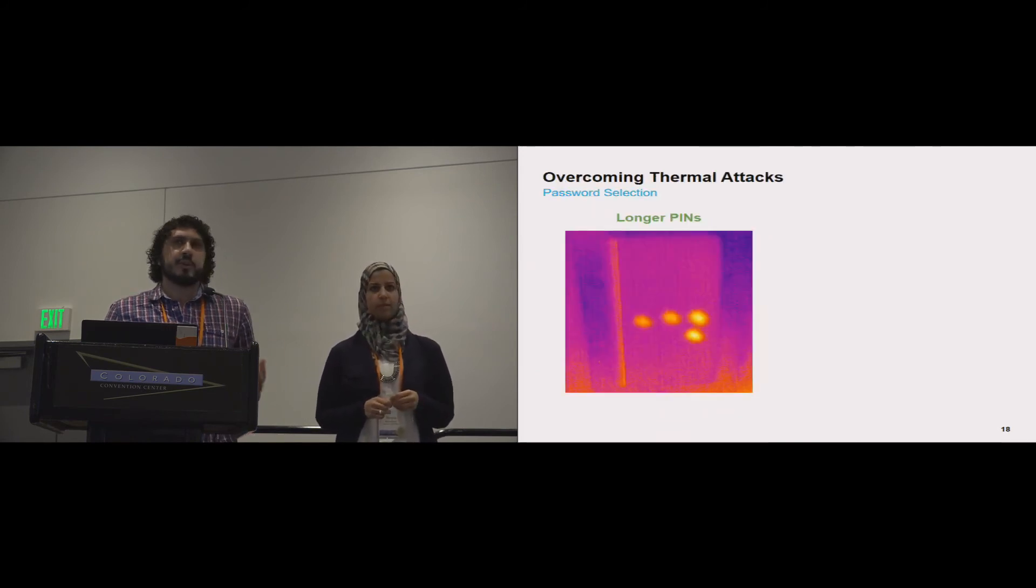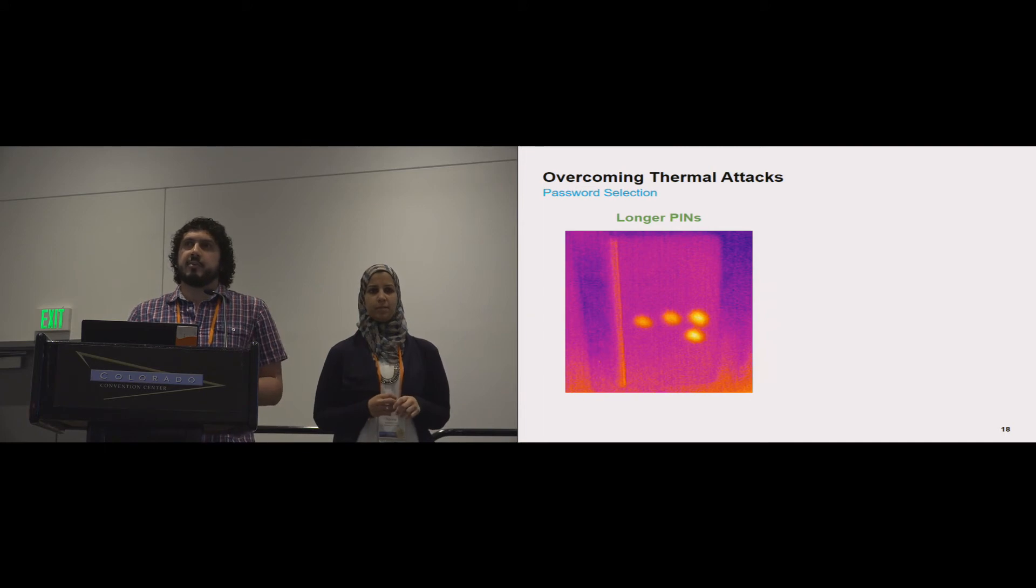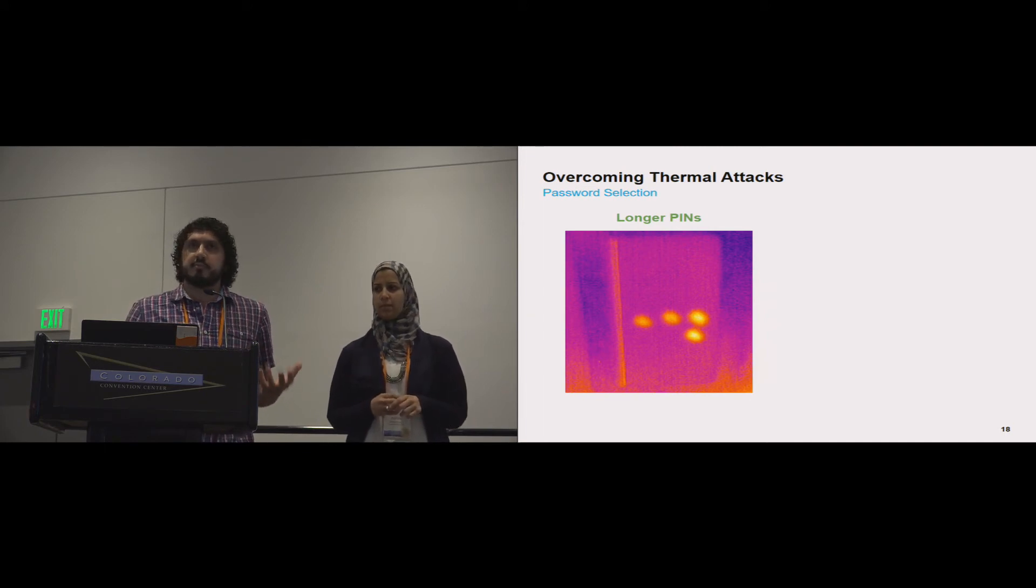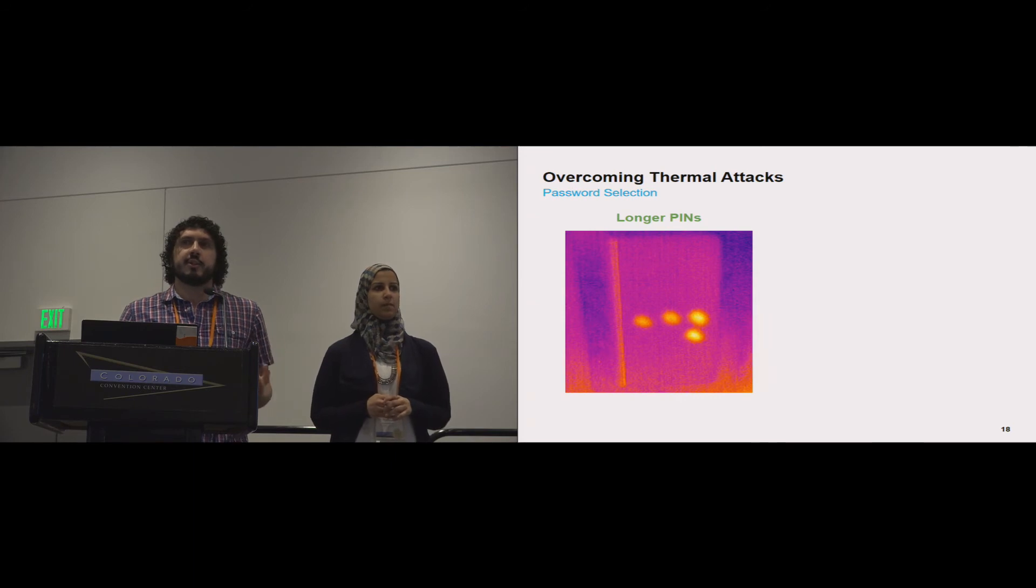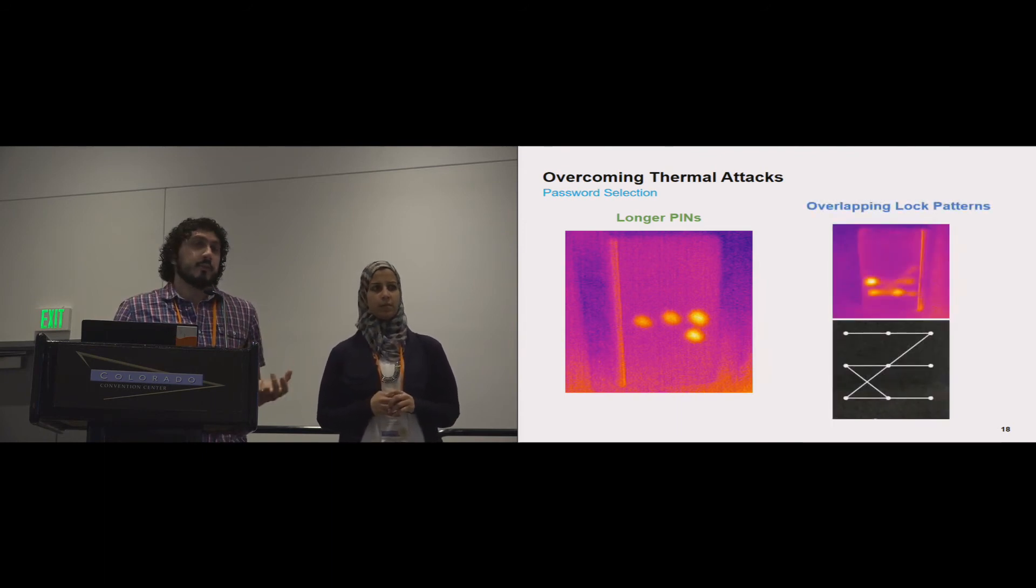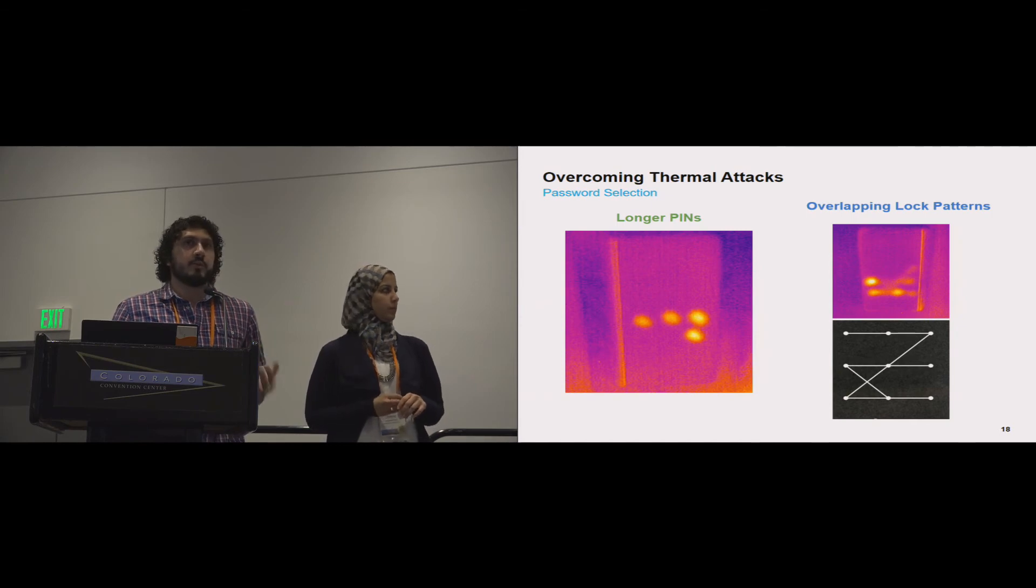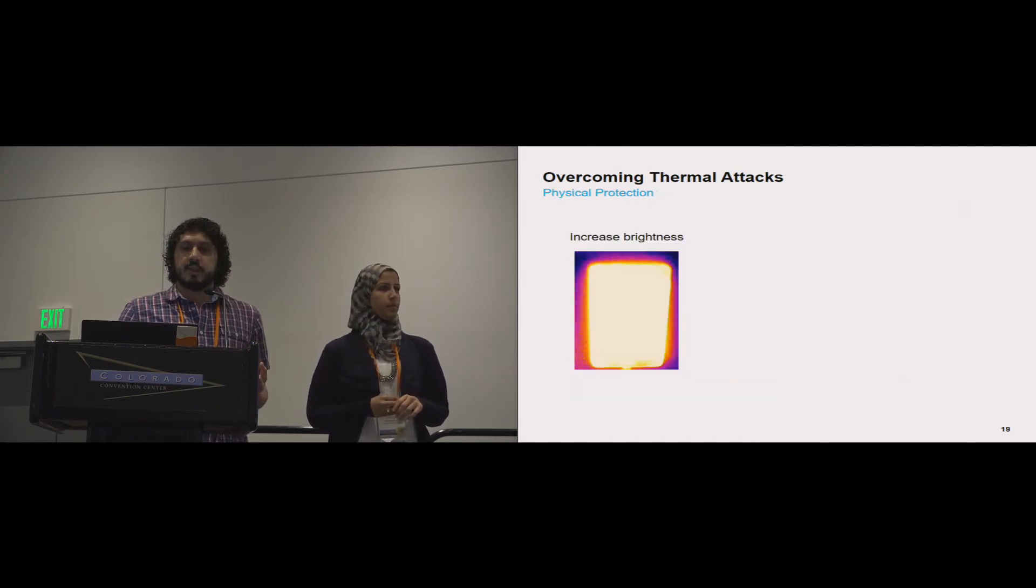Okay, so now we spoke about the threat and showed that it yields high success rates. Now, how can we protect ourselves from thermal attacks? When it comes to PINs, our recommendation is to use longer PINs. If you have longer PINs, there is a higher chance that the heat traces will decay by the time a thermal attack is taken. In case of patterns, try to have at least one overlap. It significantly increases the resistance to thermal attacks.